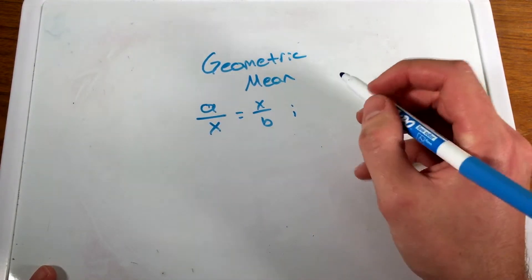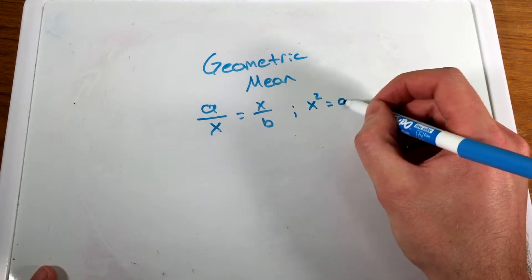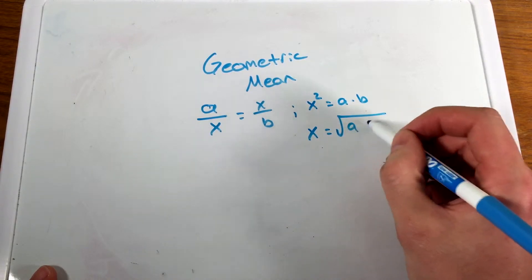So if we simplify this, we cross multiply, we have x squared equals a times b. Then we take the square root of both sides to get the square root of a b.